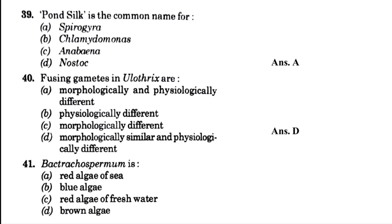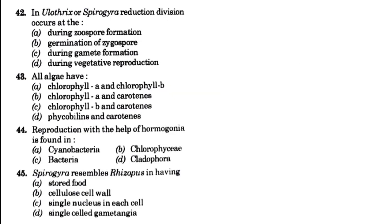Batrachospermum is — blank: red algae of sea, blue algae, red algae of fresh water, or brown algae. The answer is option C, that is red algae of fresh water. That's why in a previous question we discussed the cause of the Red Sea and the answer was not Batrachospermum. Then, in Ulothrix or Spirogyra, reduction division occurs at — blank: during zygospore formation, germination of a zygospore, during gamete formation, or during vegetative reproduction. The answer is option B, that is germination of a zygospore.